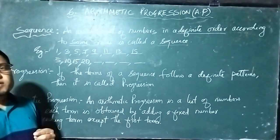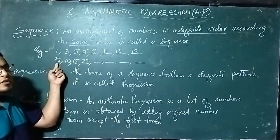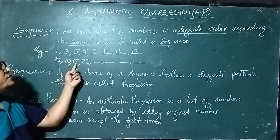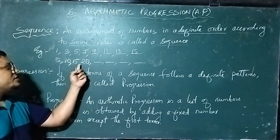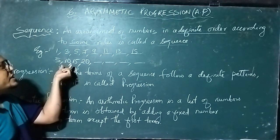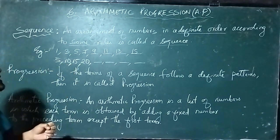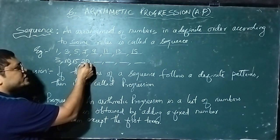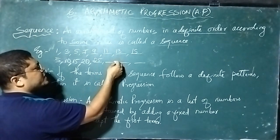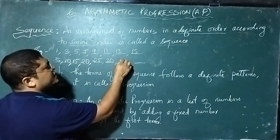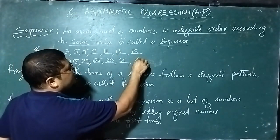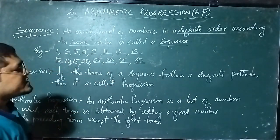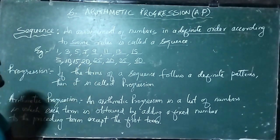The first number we have written already — the first number cannot be changed. After that we add 5: 5 plus 5 is 10, again add 5 gives 15, again add 5 gives 20. So this is also in a definite order and the rule of this order is adding 5. Let us write some more: 20 plus 5 is 25, 25 plus 5 is 30, 30 plus 5 is 35, 35 plus 5 is 40. This is in a definite order, the rule is adding 5, and this type of order is called a sequence.